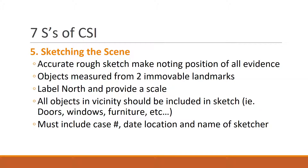The fifth S is to sketch the scene. They create an accurate rough sketch making note of the position of all evidence. They measure objects from two immovable landmarks, label north, and provide a scale. All objects in the vicinity — doors, windows, furniture, etc. — should be in the sketch, and they need to include a case number, date, location, and the name of the sketcher.